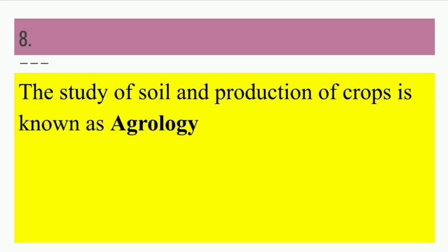Next we have agrology. As you can see, this 'agro' term is derived from agriculture. So this is the study of soil and production of crops — basically what type of soil is there, what type of soil is good for the production of a particular crop, different types of crops and the study of the relation between soil and the production of crops. This all is under agrology.